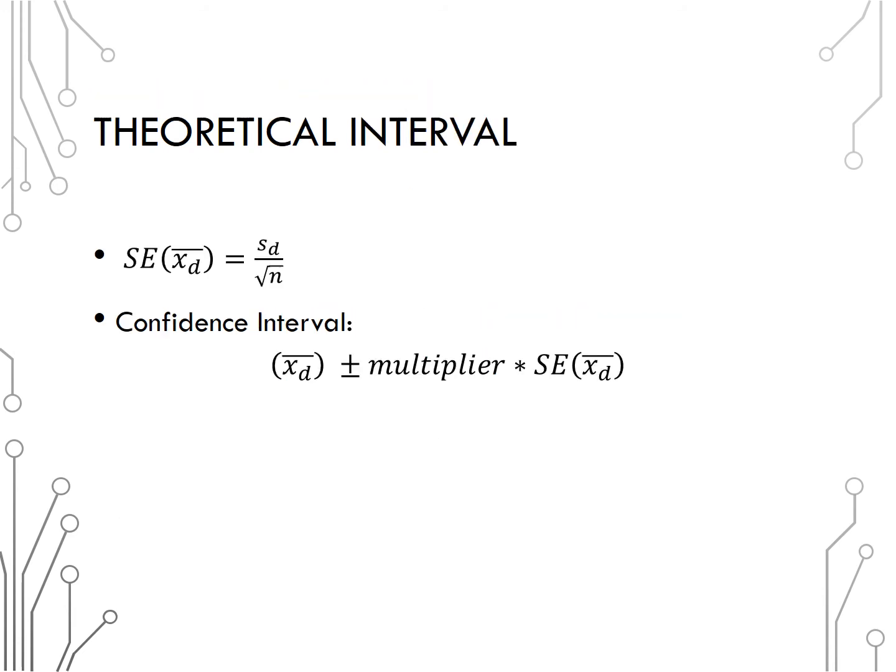The assumption in a hypothesis test that mu d equals zero has no impact on our standard error formula, so we use the same formula, or that the standard error of the mean of differences is S sub d over the square root of n.